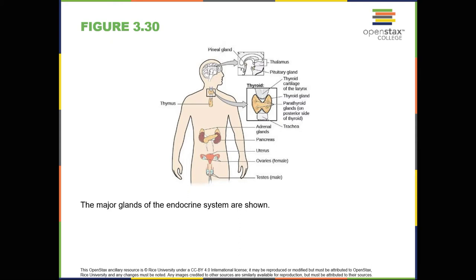People who suffer from diabetes do not produce enough insulin. Therefore, they must take medications that stimulate or replace insulin production, and they must closely control the amount of sugars and carbohydrates they consume. The gonads secrete sexual hormones, which are important in reproduction and mediate both sexual motivation and behavior. The female gonads are the ovaries; the male gonads are the testes. Ovaries secrete estrogens and progesterone, and the testes secrete androgens, such as testosterone.